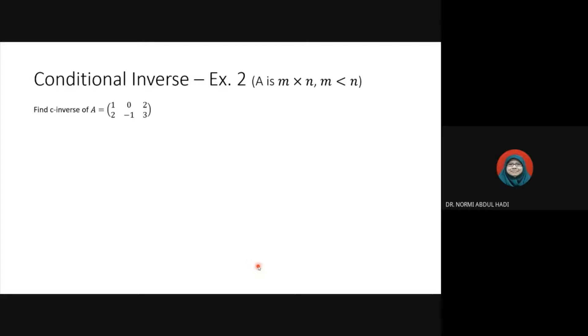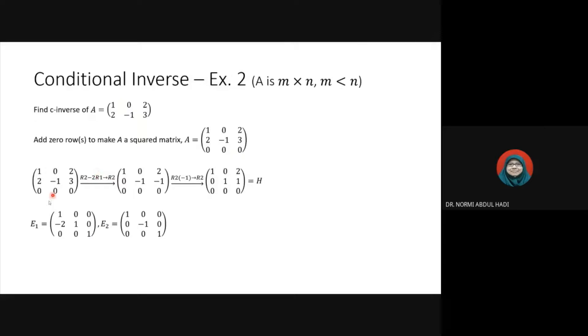Next example: C-inverse of A. In this example, m is less than n. First create one more row. From this matrix use Hermite form. As long as they satisfy Hermite form, and Hermite is not unique, C is not unique. This is Hermite form.